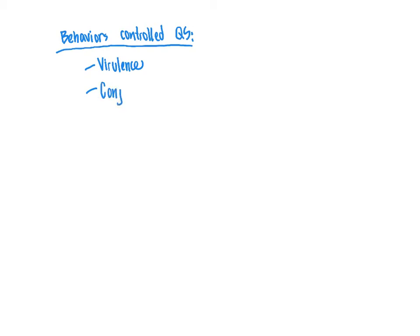Another behavior controlled by quorum sensing is conjugation — where bacteria engage in gene exchange, with one bacterium shuffling genes to another nearby bacterium. This is controlled by quorum sensing because if there are very few bacteria nearby, gene exchange would not be effective. As the population reaches a certain threshold, the genes enabling conjugation become activated — transcribed and translated — to enable that process to take place.